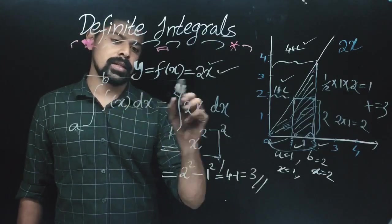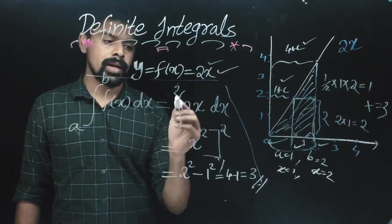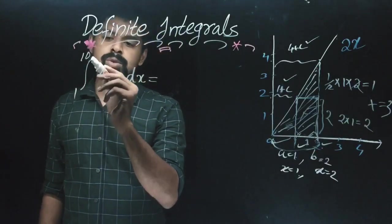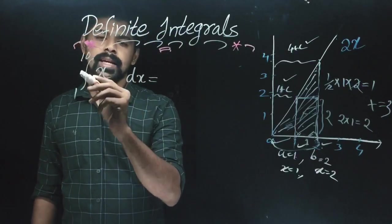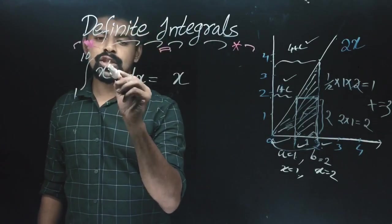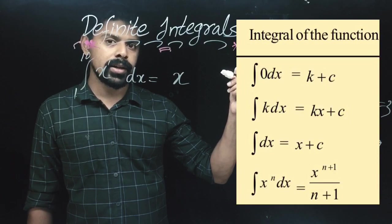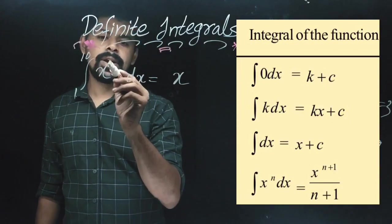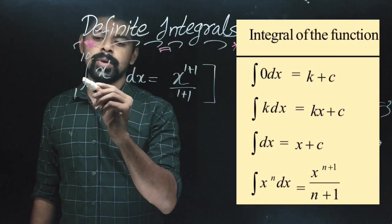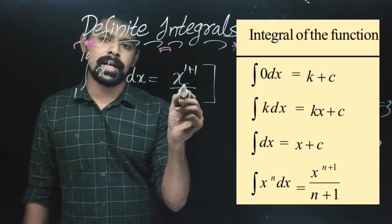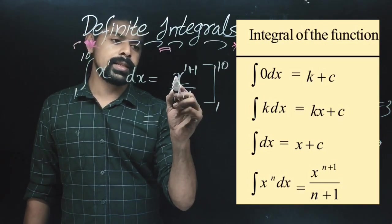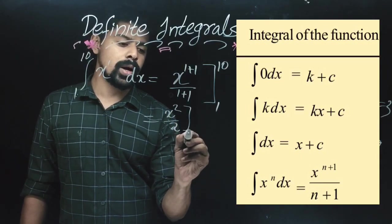This is the direct method for a definite integral. Now let's do an example. Example 1: integral from 1 to 10 of x dx. Here x is the function and the boundary is 1 to 10. Using the formula, x raised to n integrates to x raised to n+1 divided by n+1. If n = 1, that is x raised to 1+1 divided by 1+1, giving x squared by 2, evaluated from 1 to 10.